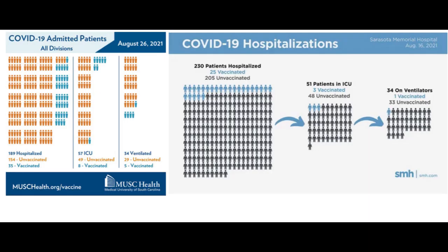So is ADE happening now? The answer is no. Individual hospitals have been posting data — from around August 21st and 22nd — from hospitals in South Carolina and Florida, both showing that primarily the people hospitalized due to COVID are unvaccinated. It's particularly evident in the number of people on ventilators. So you can see that if ADE was happening, these numbers would be flipped. People who have antibodies would be doing worse, whereas people who are vaccinated are doing better and are less likely to be admitted to the hospital.